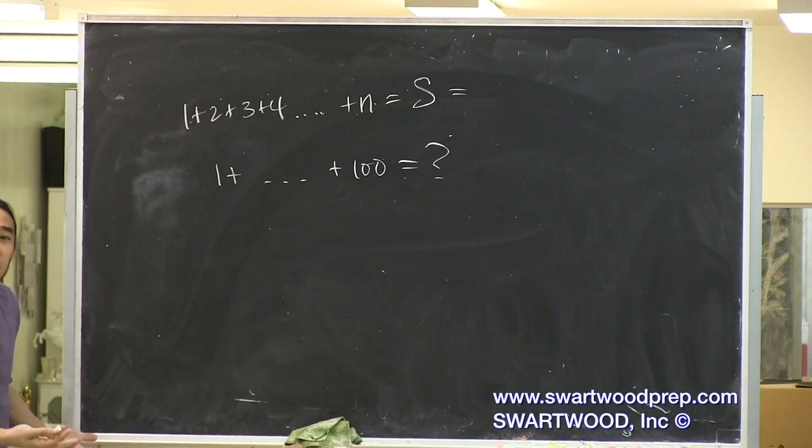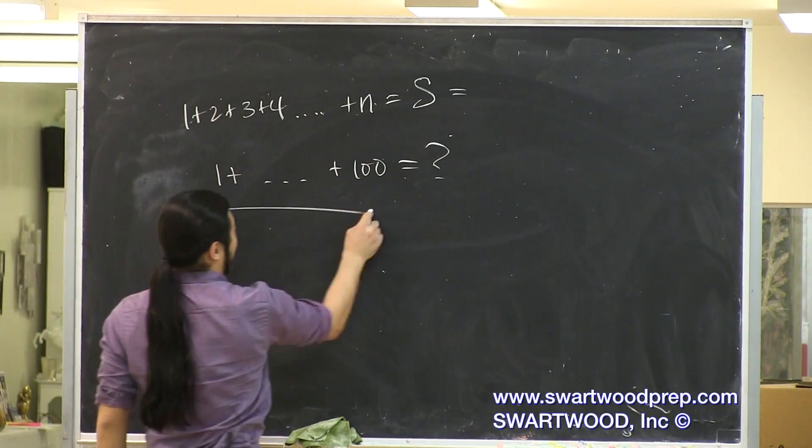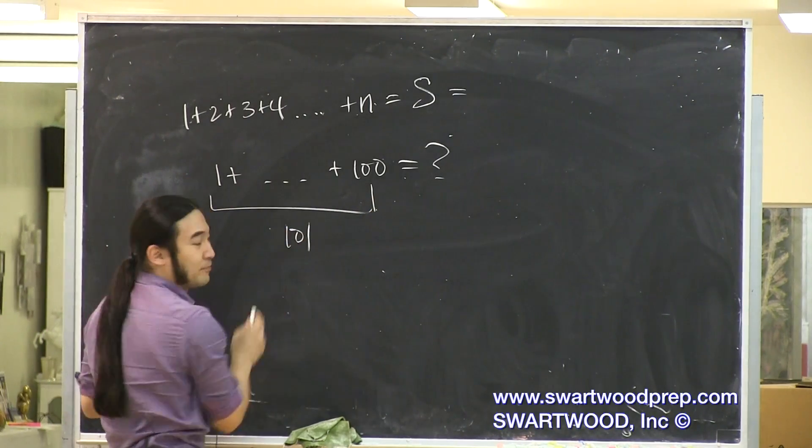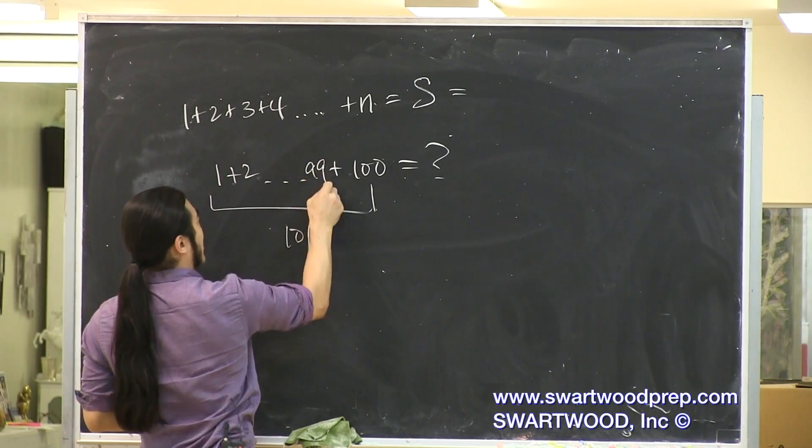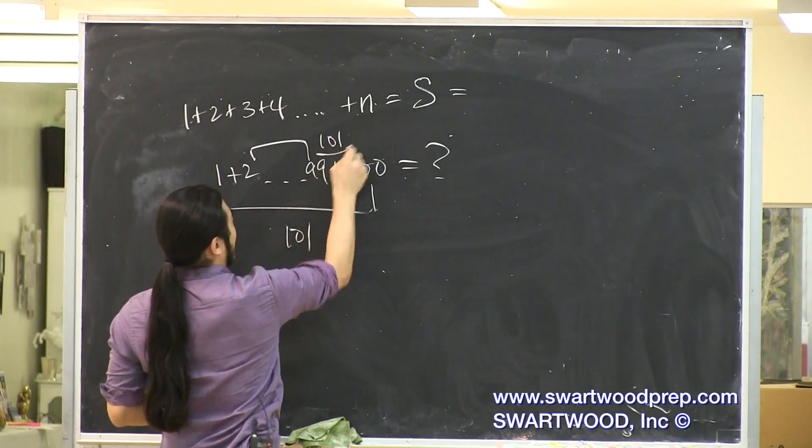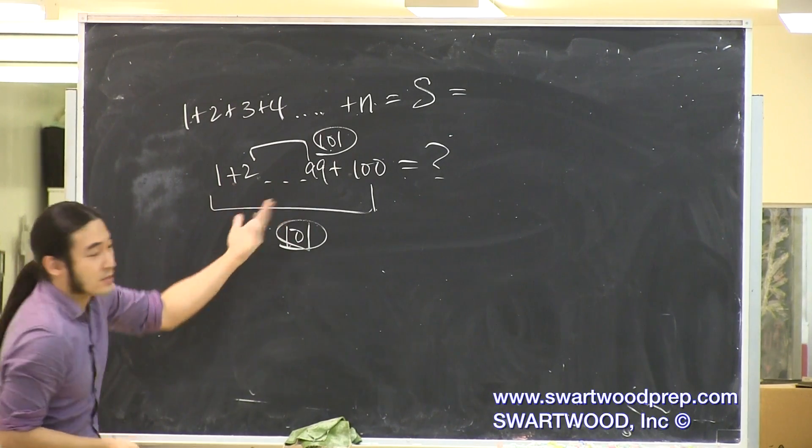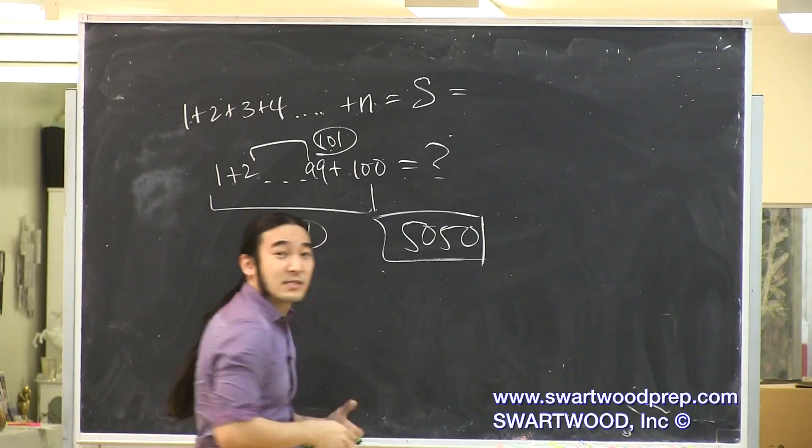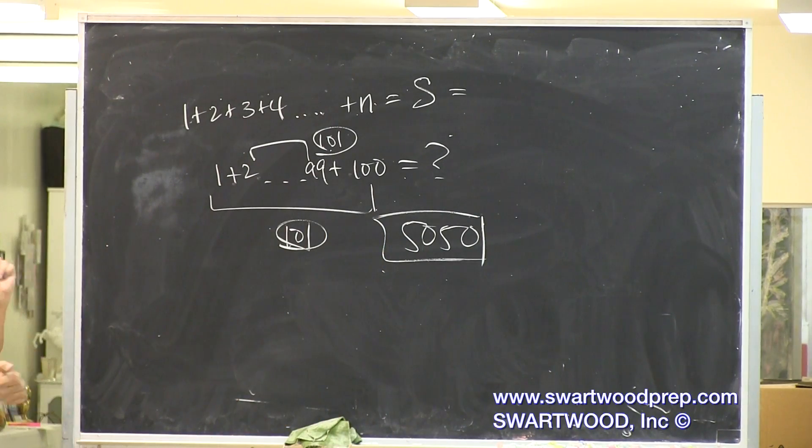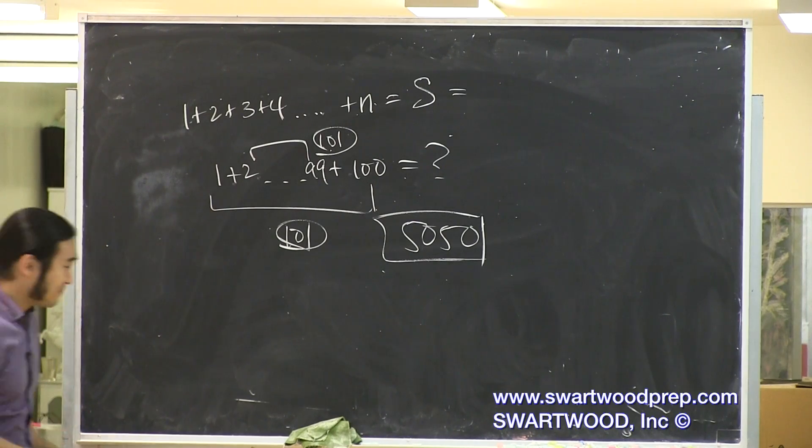So apparently, baby Gauss sat there and went, why do I have to do this? According to him, it was obvious that one and a hundred adds up to 101. And then he said, well, you know what, if you go up one and you go down one, the sum is still the same. Then he realized you got 50 pairs of these. So the sum must be 5050. And the story is, he walks up, writes it on his little chalkboard, tosses it on the teacher's desk and says, okay. All good I guess.